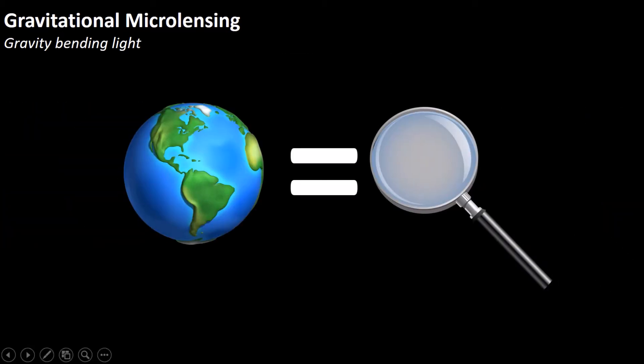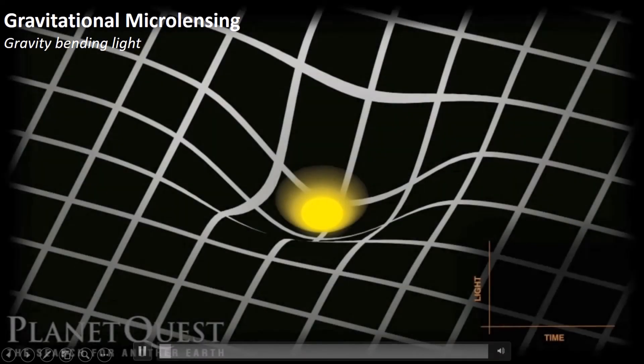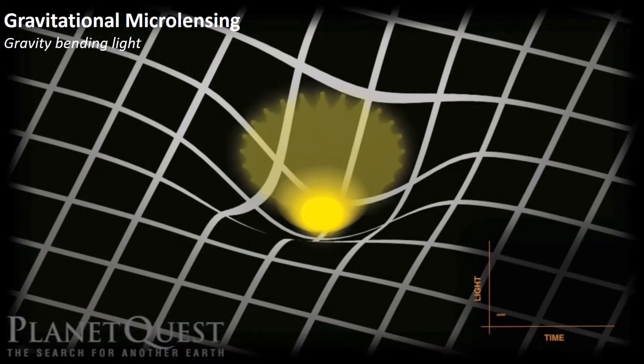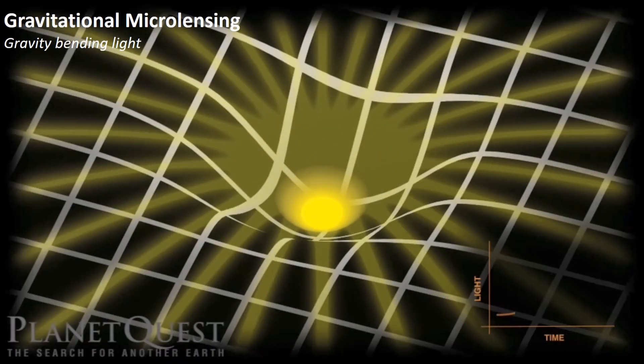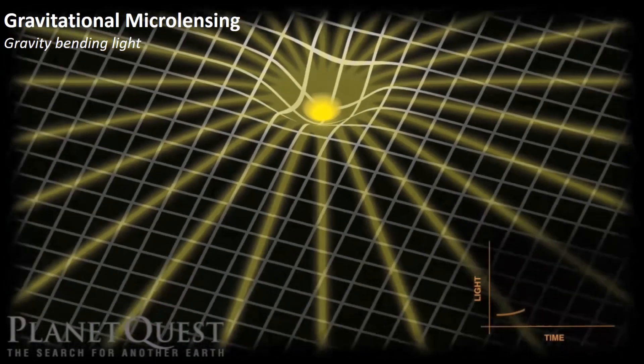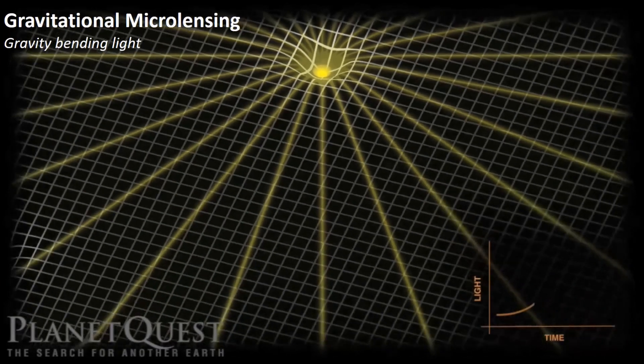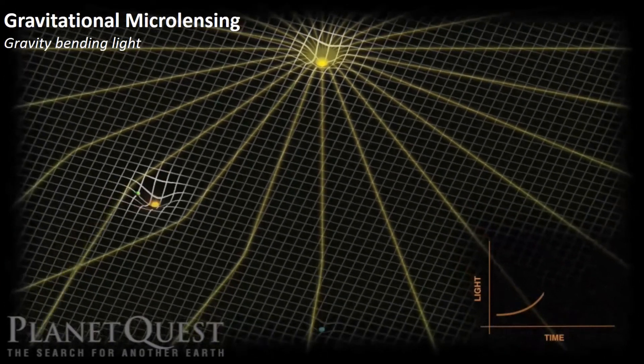This is because spacetime is distorted close to large masses such as stars or planets, and as space changes its shape, light, which has to travel through that space, can no longer travel in straight lines.